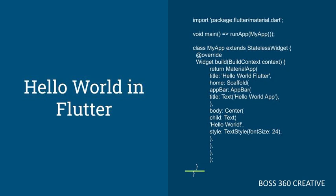All right, now let's dive into some code. Here's a simple example of a Flutter app that displays the classic Hello World message. First, we import the material.dart package, which gives us access to Flutter's material design widgets. Then, we define our main function, which is the entry point of our app. Inside the main function, we call the runApp method and pass in an instance of our MyApp widget. MyApp is a stateless widget, which means it's a simple, immutable UI component. In the build method of MyApp, we return a MaterialApp widget, which provides us with a basic app structure and material design components. Inside the MaterialApp, we have a Scaffold widget, which acts as the main container for our app's UI. Within the Scaffold, we have a Center widget that centers its child, which in this case is a Text widget displaying Hello World. Pretty straightforward, right?